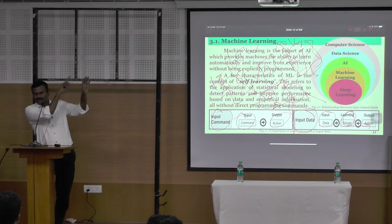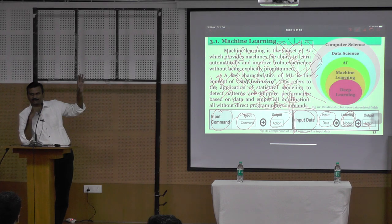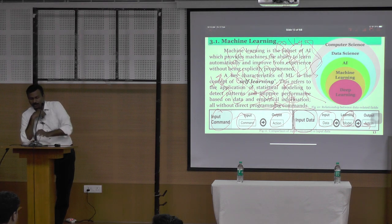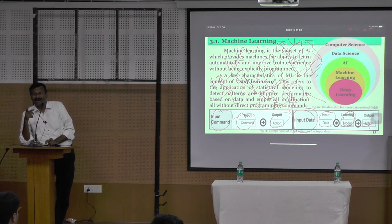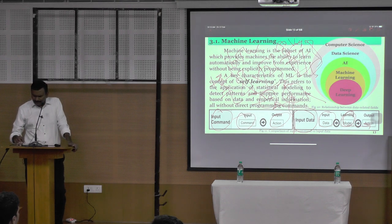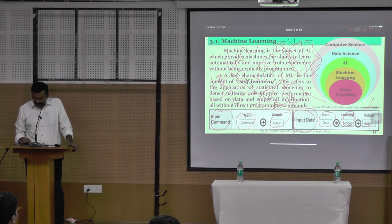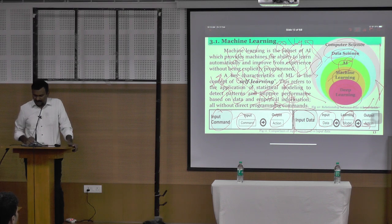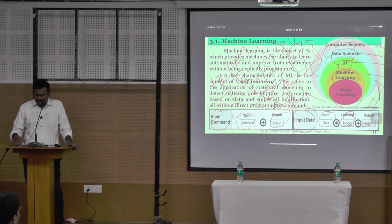That area — what is machine learning — that is the application. So you know: what is a command, what is an input, what is the difference between a calculator and machine learning. Now, the machine learning hierarchy: first is computer science, then data science, then artificial intelligence, then machine learning, and then deep learning.